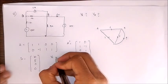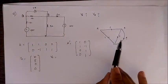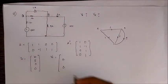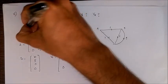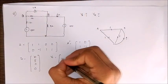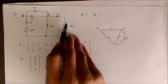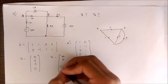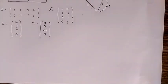Now we write the voltage source matrix VS. Voltage sources are present in the first and fourth branches; all others are zero. For the first branch, the current direction is entering the positive terminal, so we give a positive value. For the fourth branch, the current direction is entering the negative terminal, so we give it minus twenty.